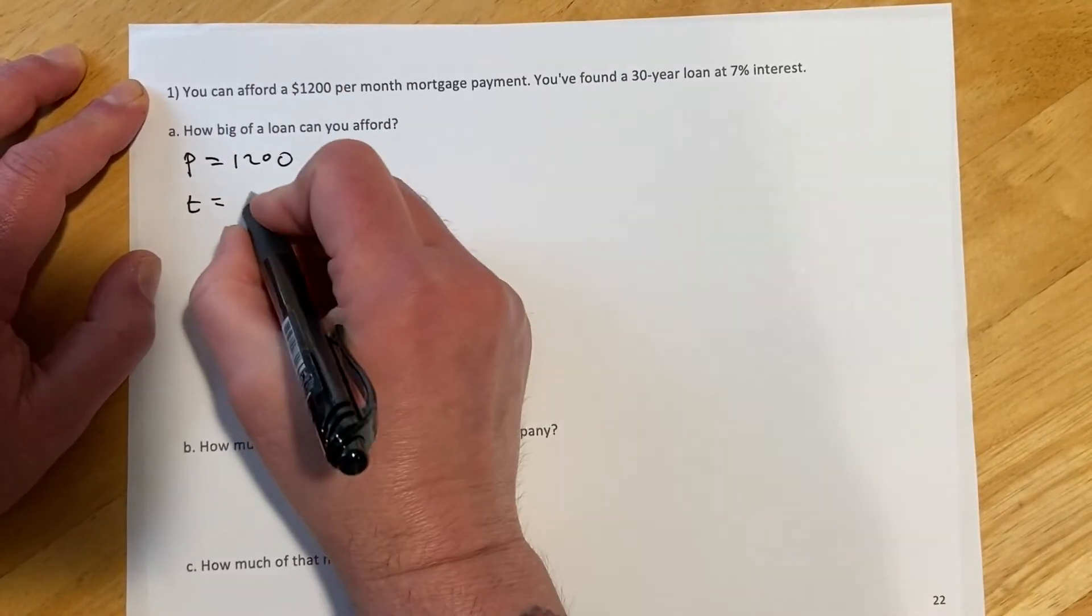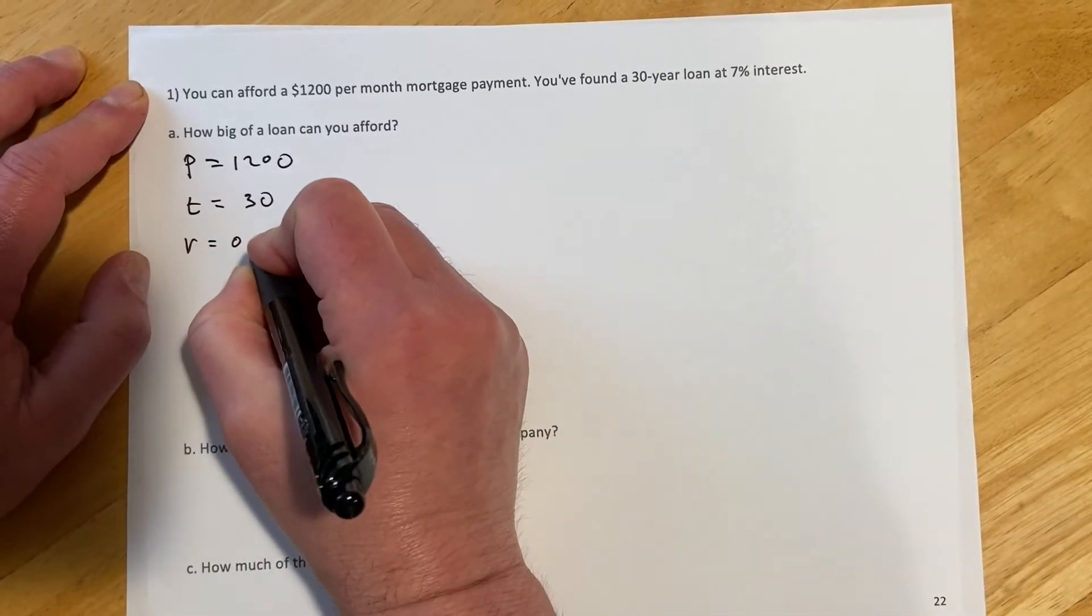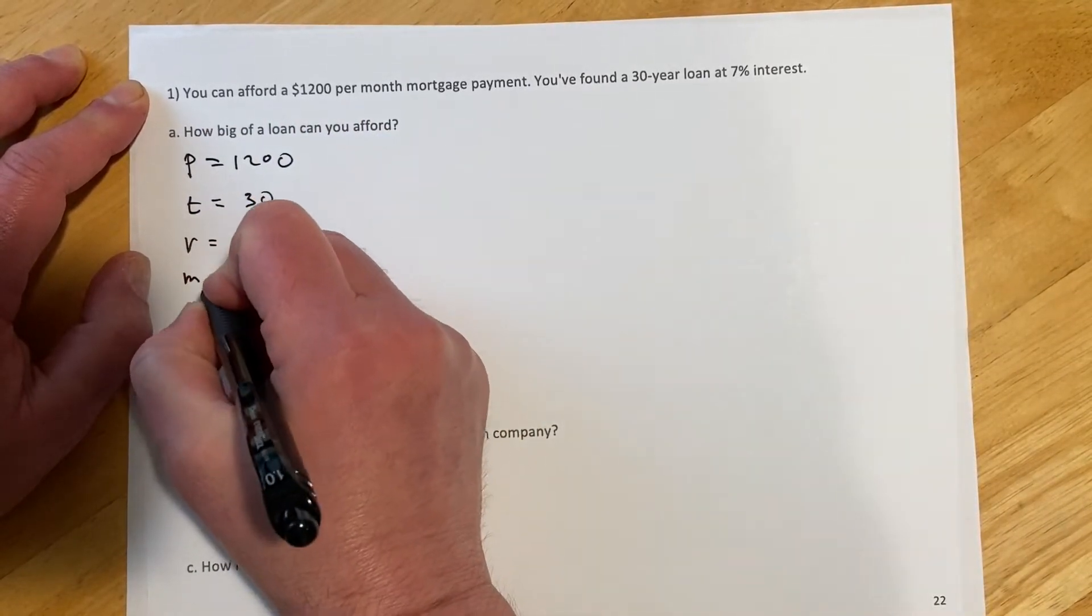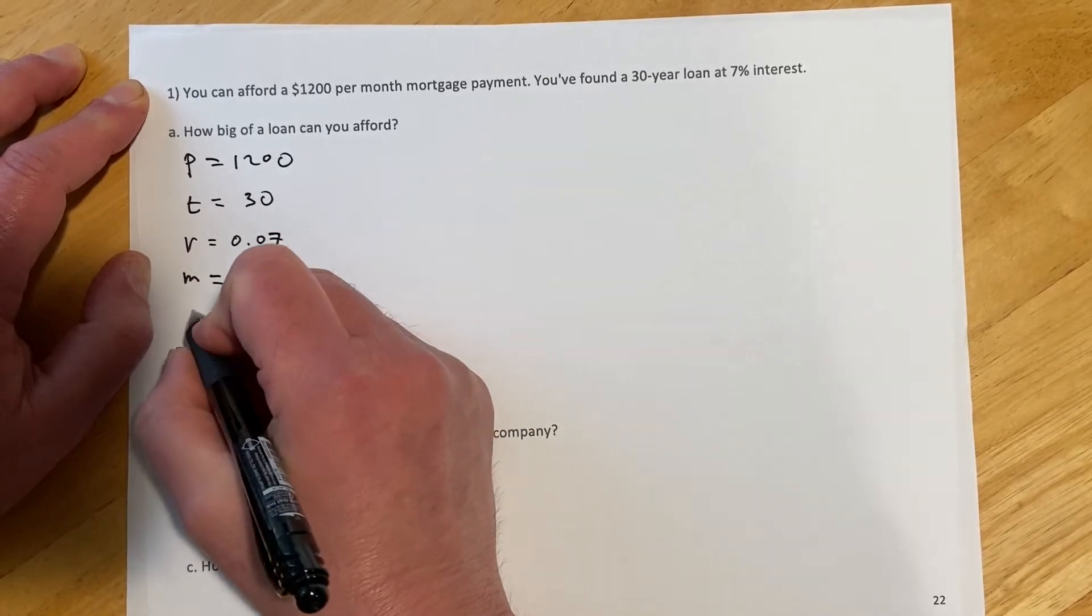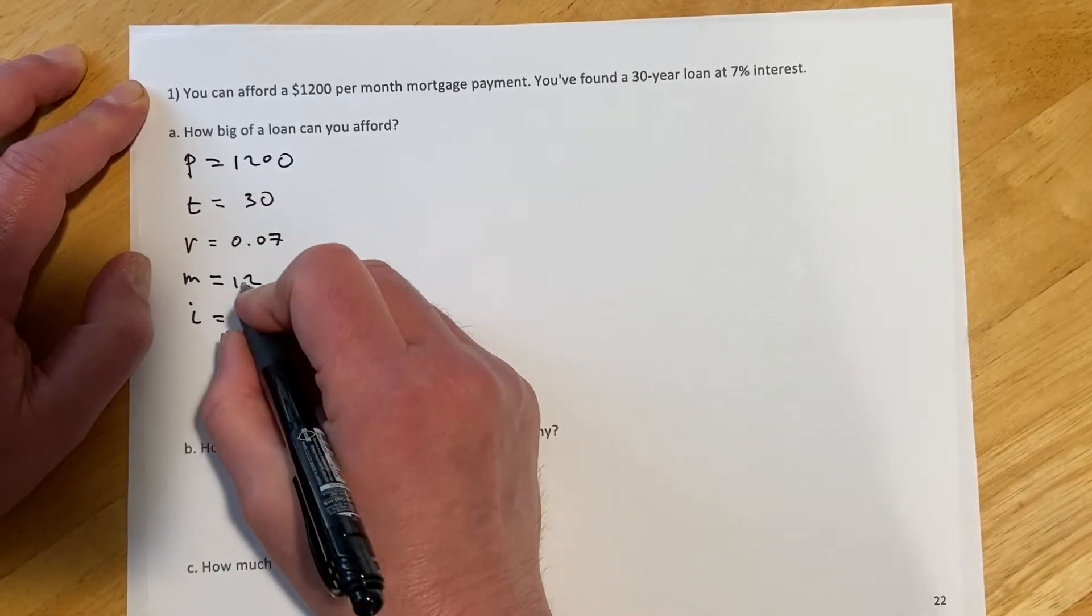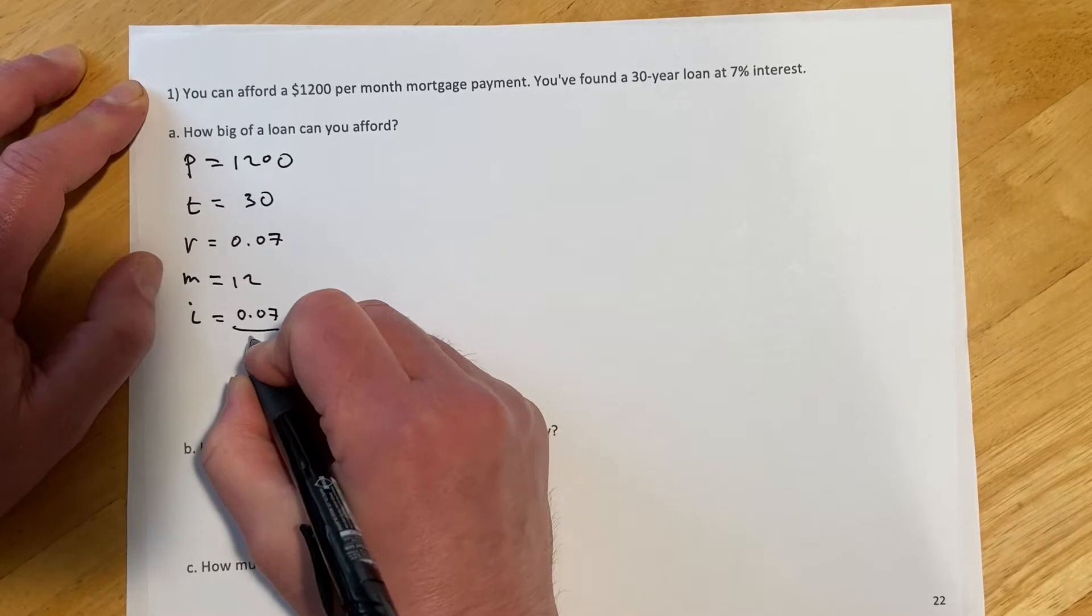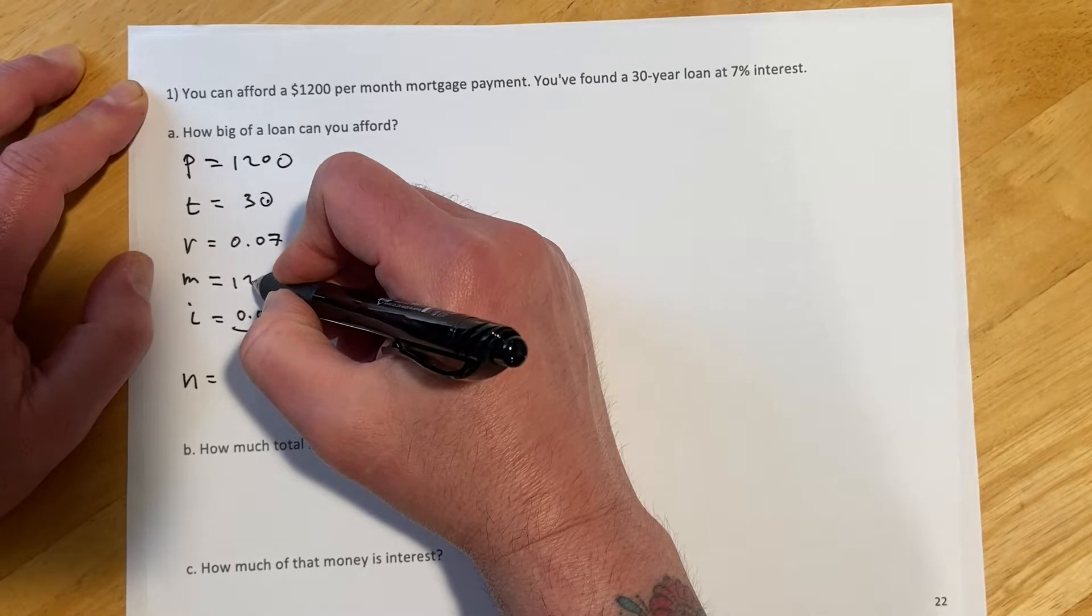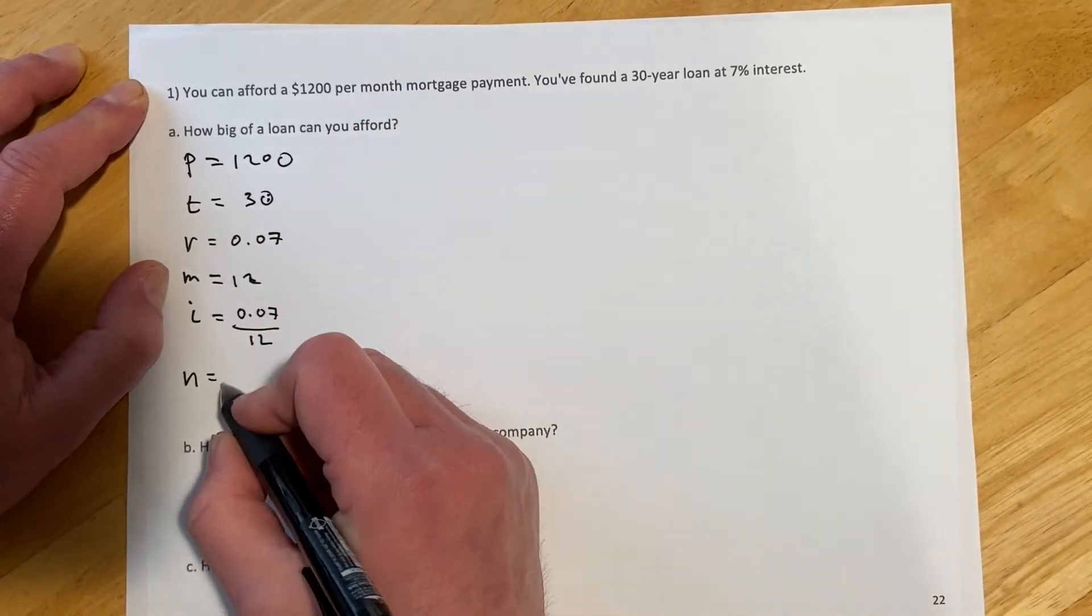Time is a 30-year loan. Rate is 7%. We're going to be paying once a month, so M is going to be 12. And then remember, we have those two calculated quantities. I is going to be the rate divided by the number of periods, so 0.07 over 12. And then N is the number of periods, compounding periods times number of years. So that's going to be 360.